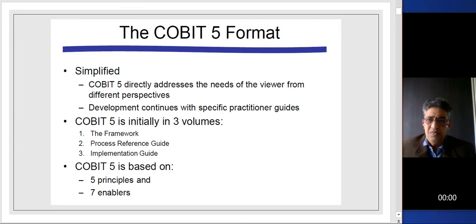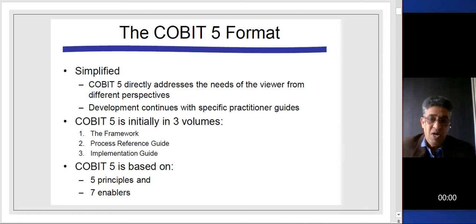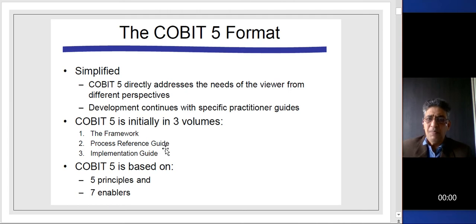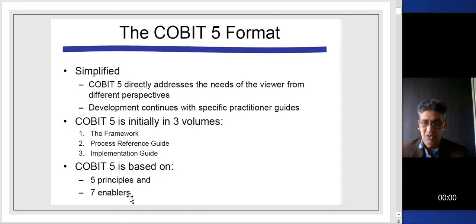The format of COBIT 5 is simplified — it directly addresses the needs of viewers from different perspectives. The development continues with specific practitioner guides. Initially, it is in three volumes: first is the framework, second is the process reference model, and third is the implementation guide. COBIT 5 is based on five principles and seven enablers.